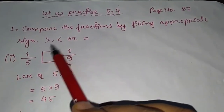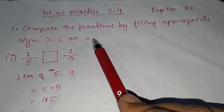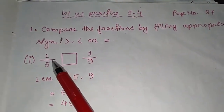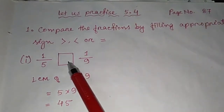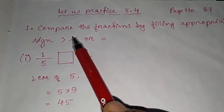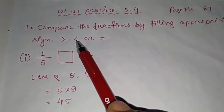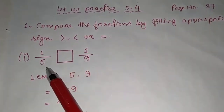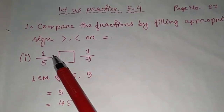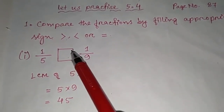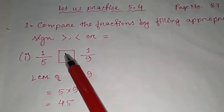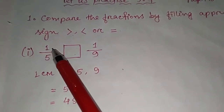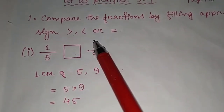Our first question is: compare the fractions by filling in the appropriate sign — greater than, less than, or equal. Our first pair is 1/5 and 1/9. Which one is greater, which one is smaller, or are both equal? Let's see.